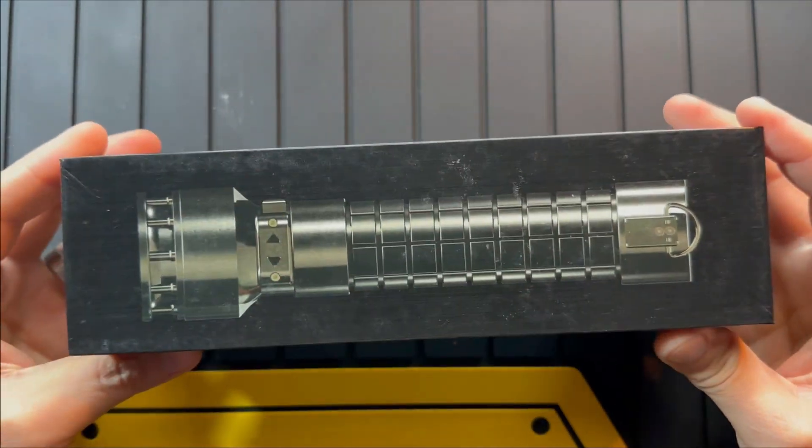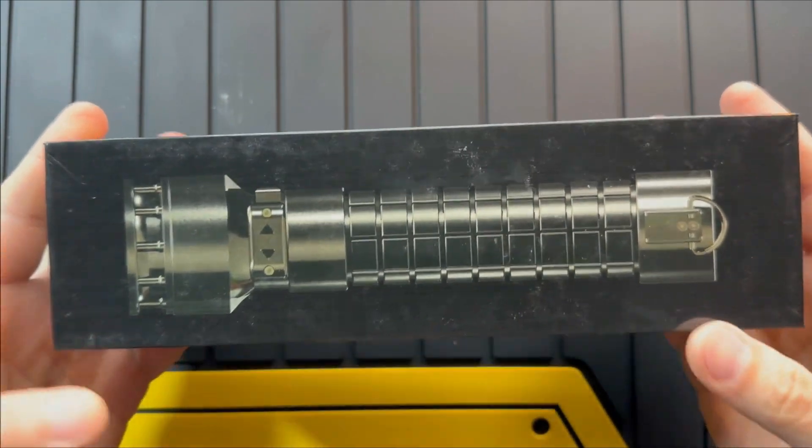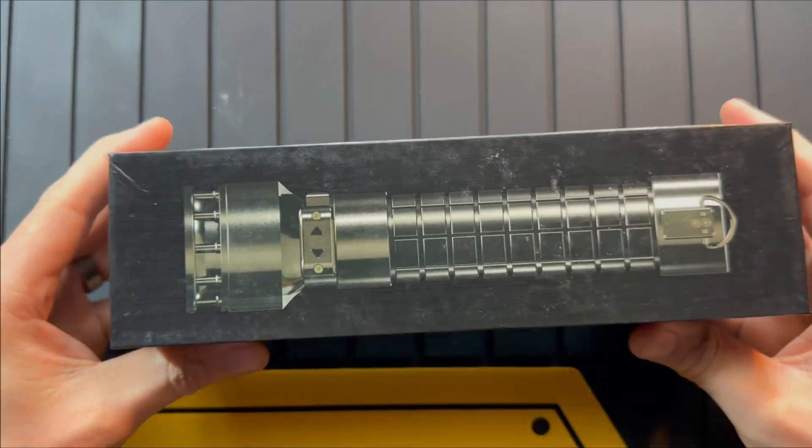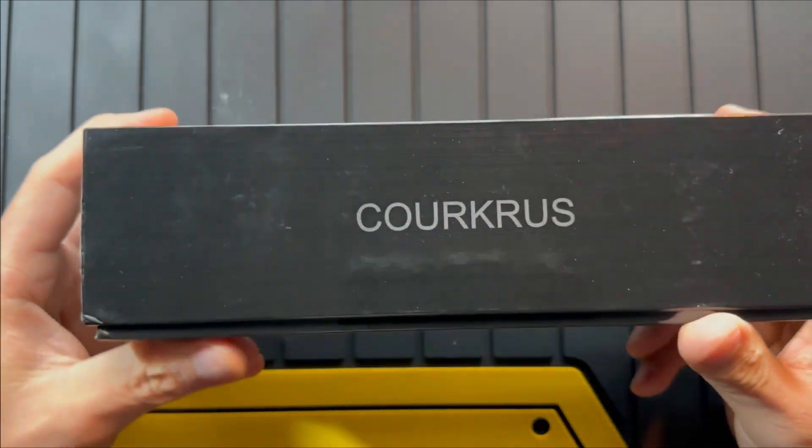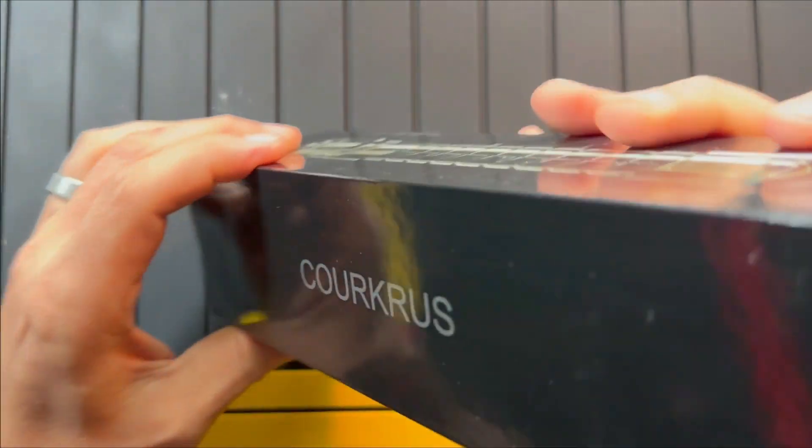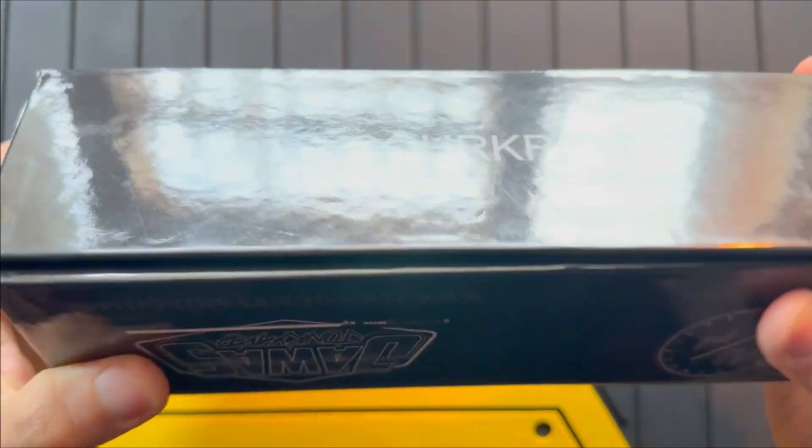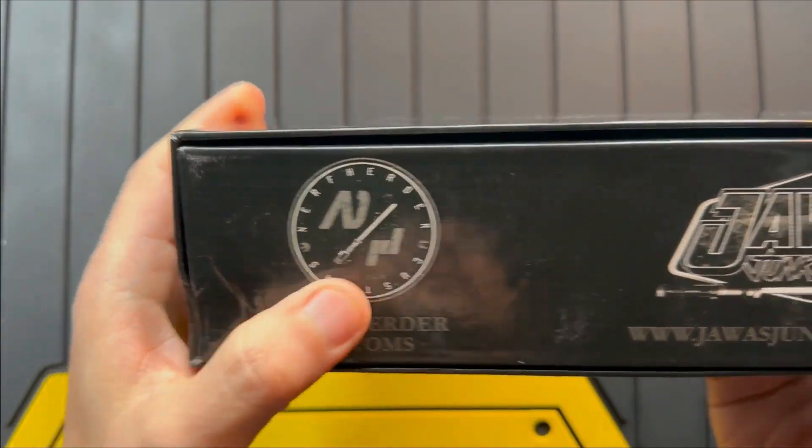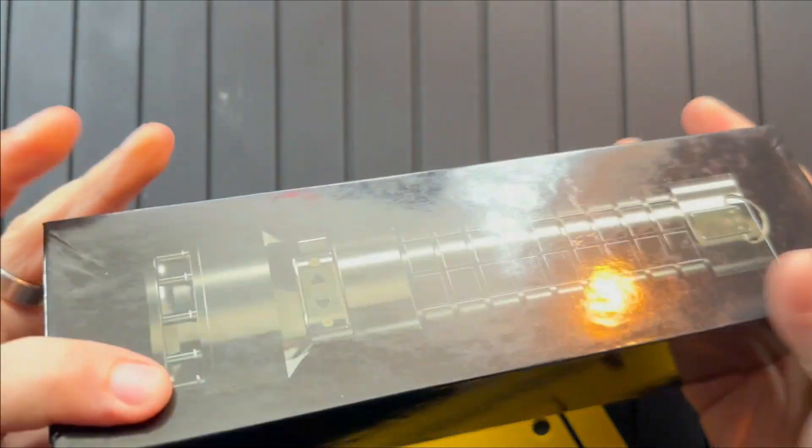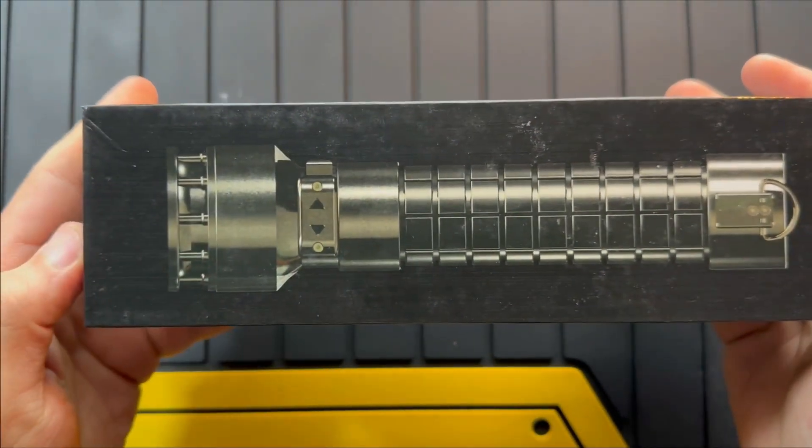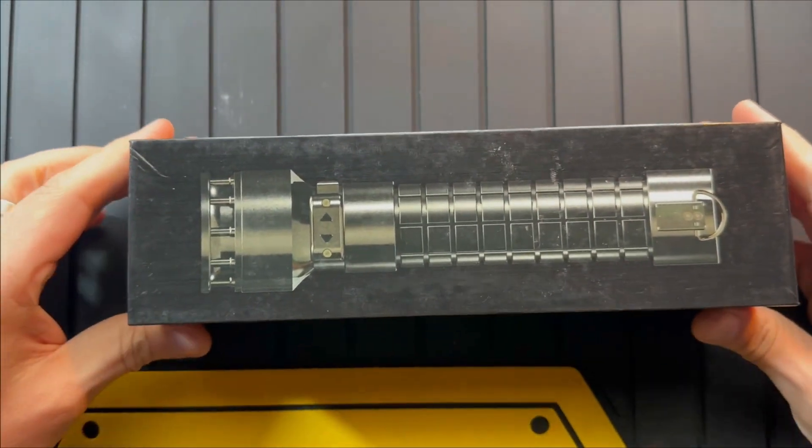First of all, it is super heavy. This saber is made out of steel. It's a very nice box. We've got Java's Junkyard over here, Corkrus, you've got Benji Nerfherder Customs logo, Java's Junkyard logo, and of course the profile of the actual saber.